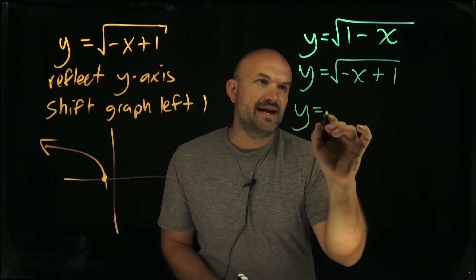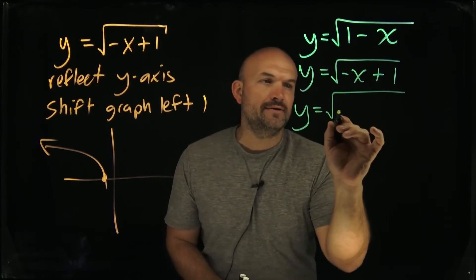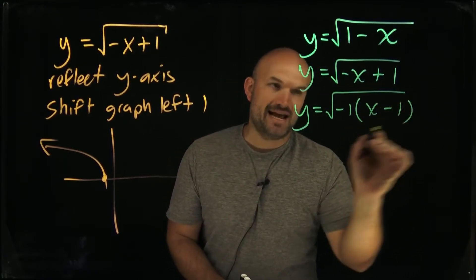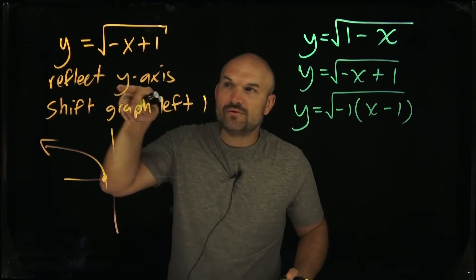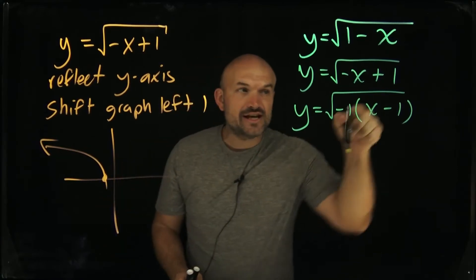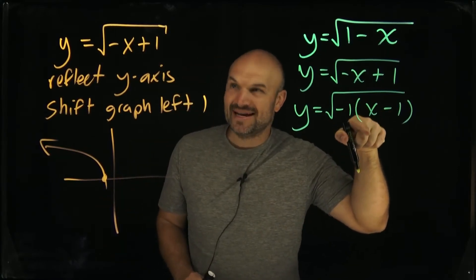So what that means is I'm going to have to now factor out a negative one. And therefore now it's going to leave me with an x minus one. The student was correct, you had a reflection about the y-axis. However, it was not a horizontal shift to the left. It was actually a horizontal shift to the right.